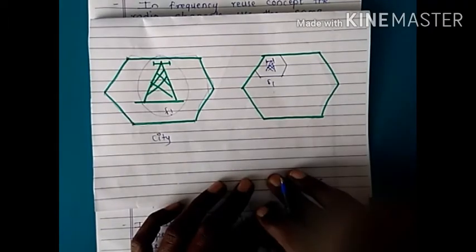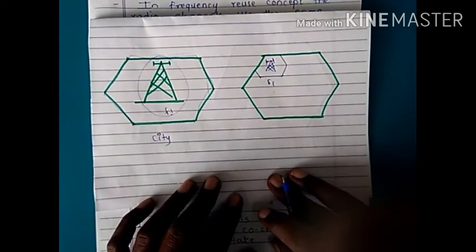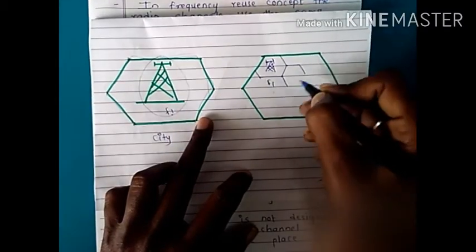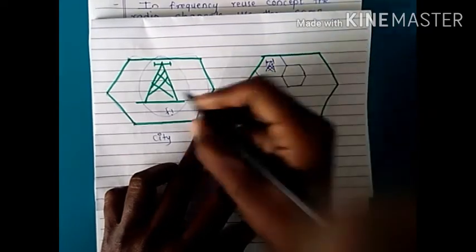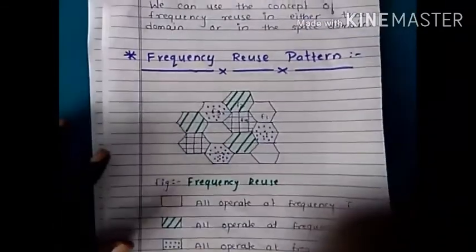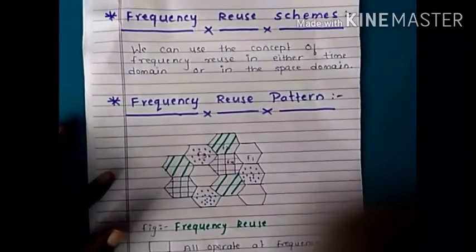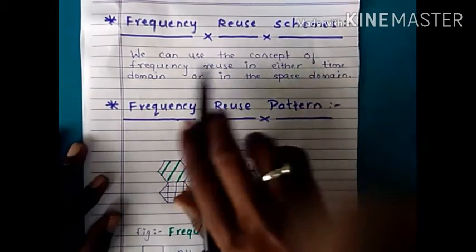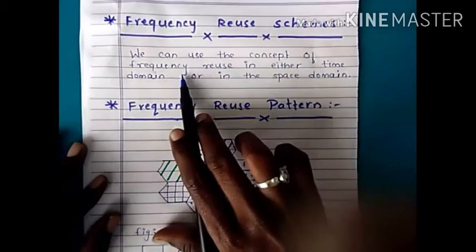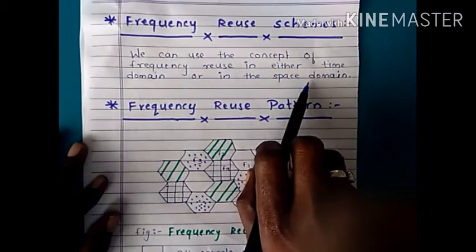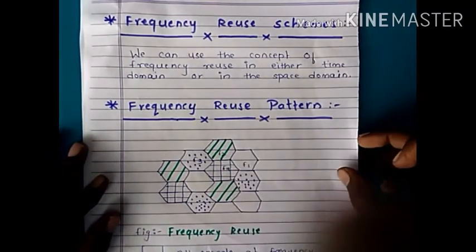Frequency reuse can be implemented in either time domain or space domain. Time domain refers to time division multiple access, TDMA, and space domain refers to where the size of the cell is used for frequency reuse pattern.